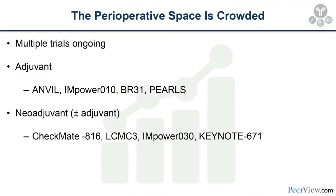Clearly, there are situations where we could do better with local control. Perhaps surgery could address this, but can we also improve systemic control and the immune response in these tumors? With excitement from the PACIFIC trial and immunotherapy moving into earlier-stage disease, the perioperative space is crowded. Multiple trials are ongoing in both adjuvant and neoadjuvant settings: ANVIL, PEARLS, BR.31 for adjuvant; and CheckMate 816, LCMC3, EMPOWER-30, and KEYNOTE-671 for neoadjuvant.